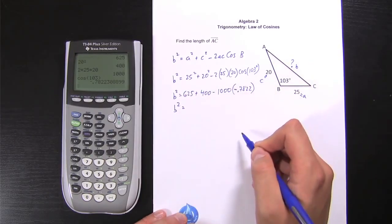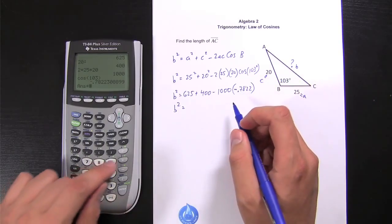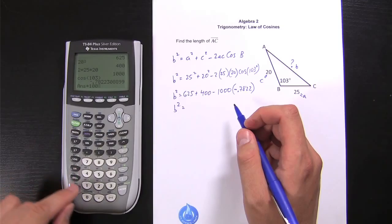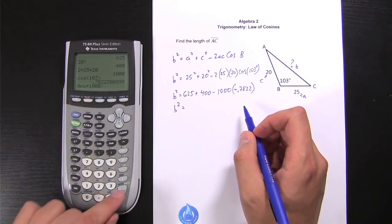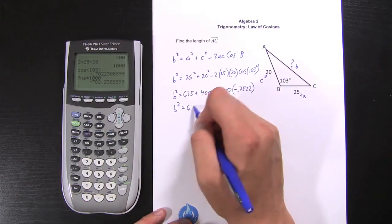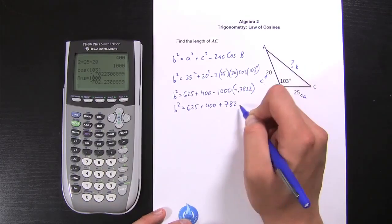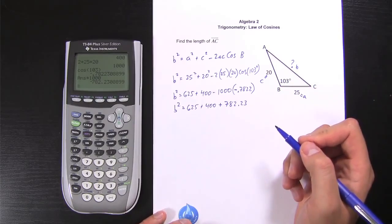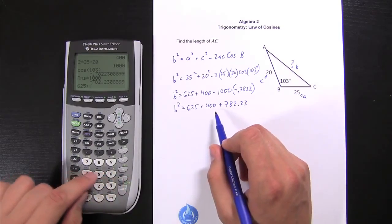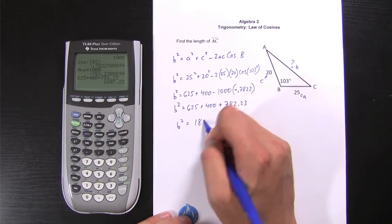Now I'm going to take this a little step further, kind of simplify things a bit. I'm actually going to save this and multiply the last thing I calculated, which was the cosine of 103. I'm going to multiply that by 1,000. So I'm going to take this cosine of 103 and multiply by 1,000, which gives me negative 782, but I've got two negatives here. So what I can do is just change the sign to positive. So I'm going to add 782. And if I want to be extra accurate, I can include two decimal points if I want to. So I will, just for this sake. So now what I'm going to do is I'm going to add these numbers. 625 plus 400 plus 782.23 gives me b squared is equal to 1807.23. And we're done, right?